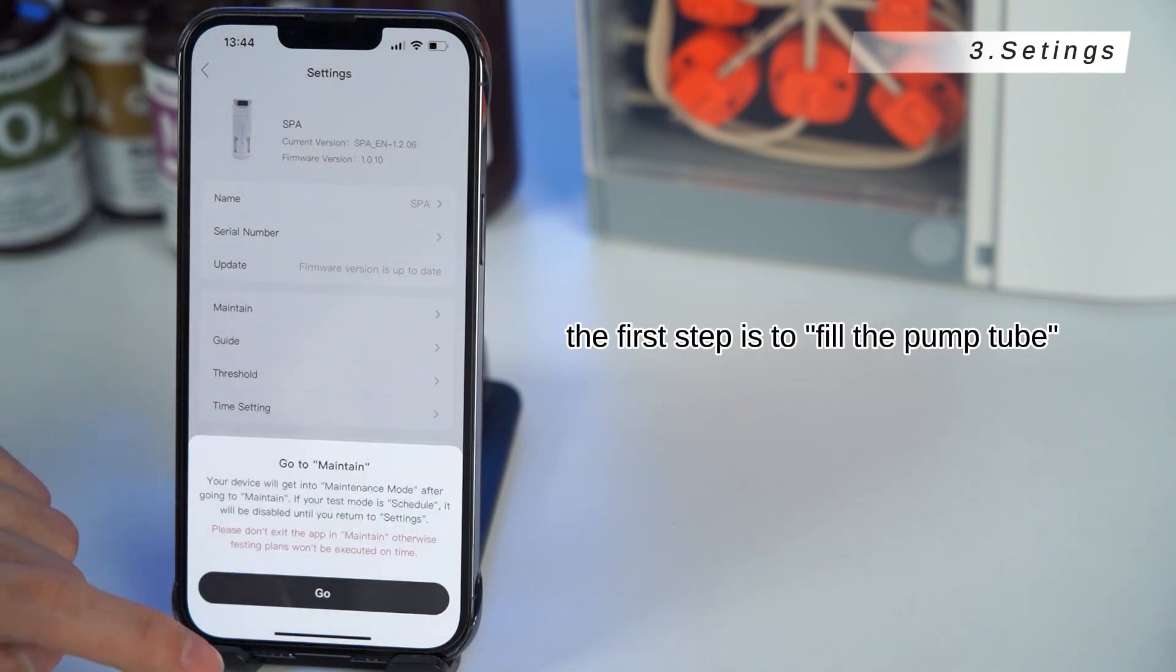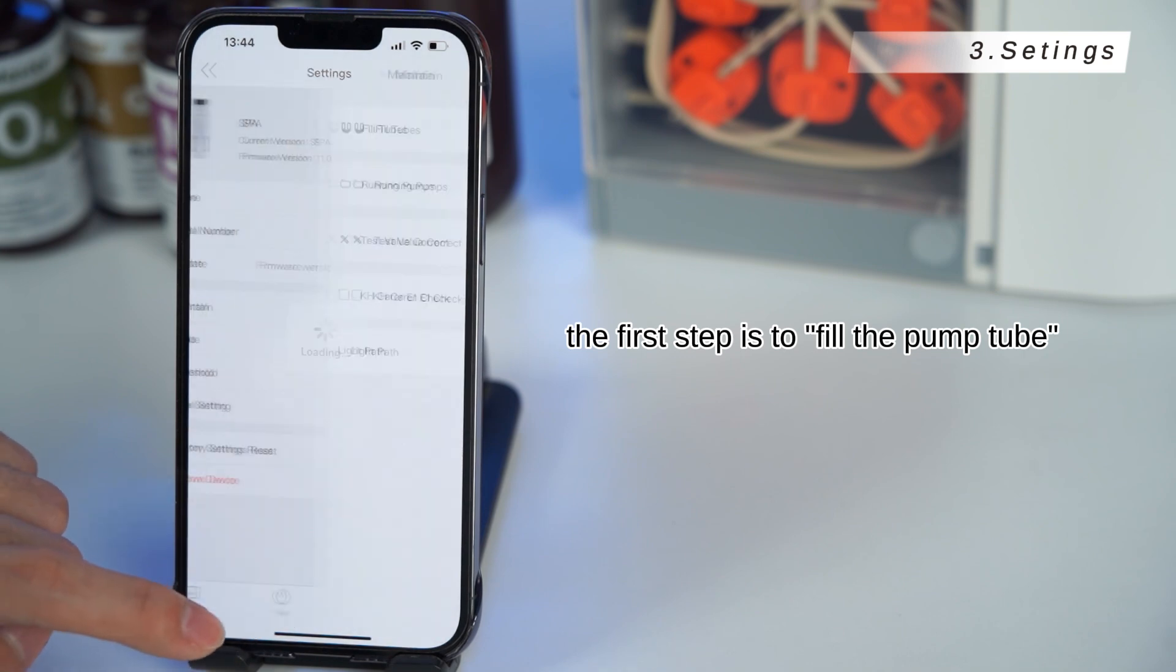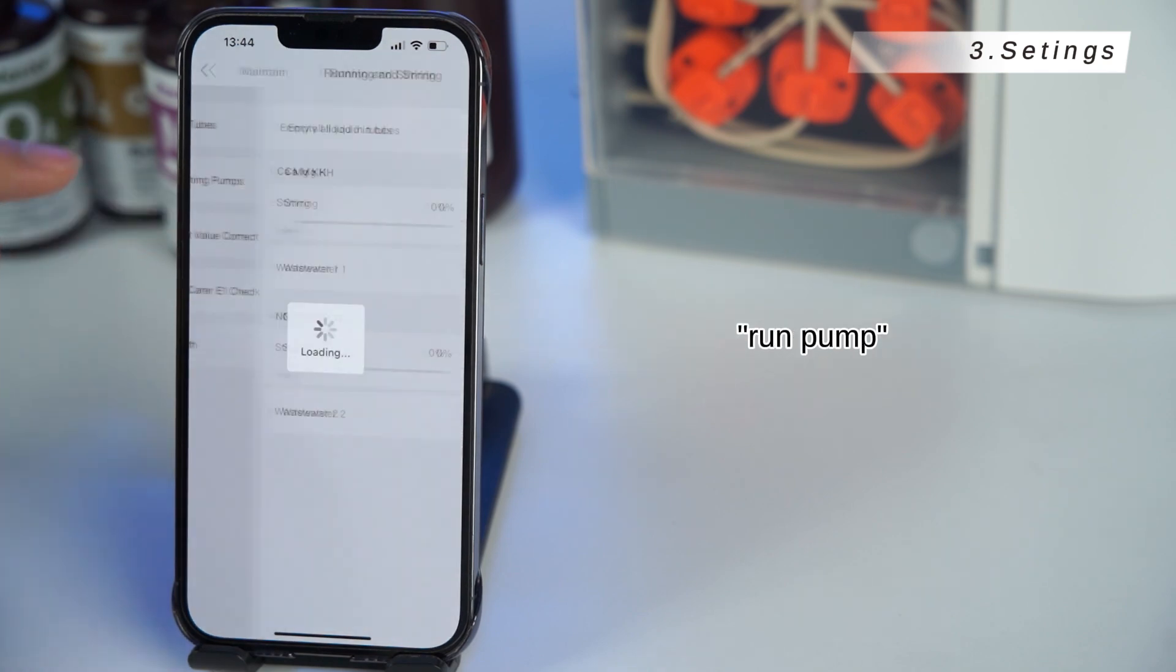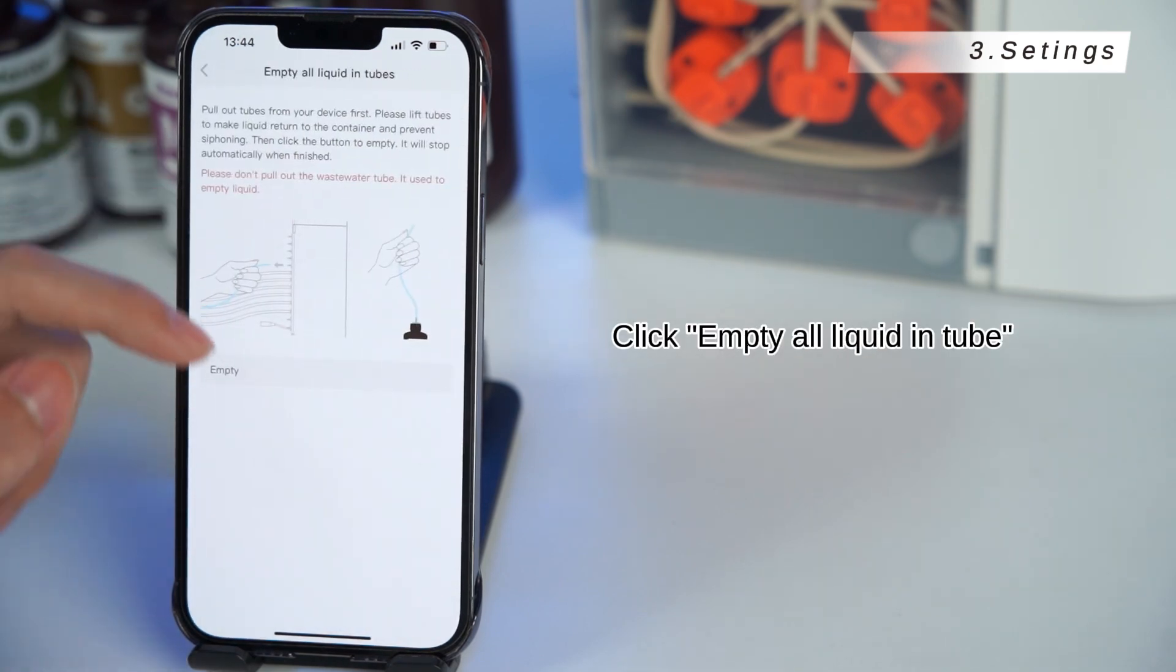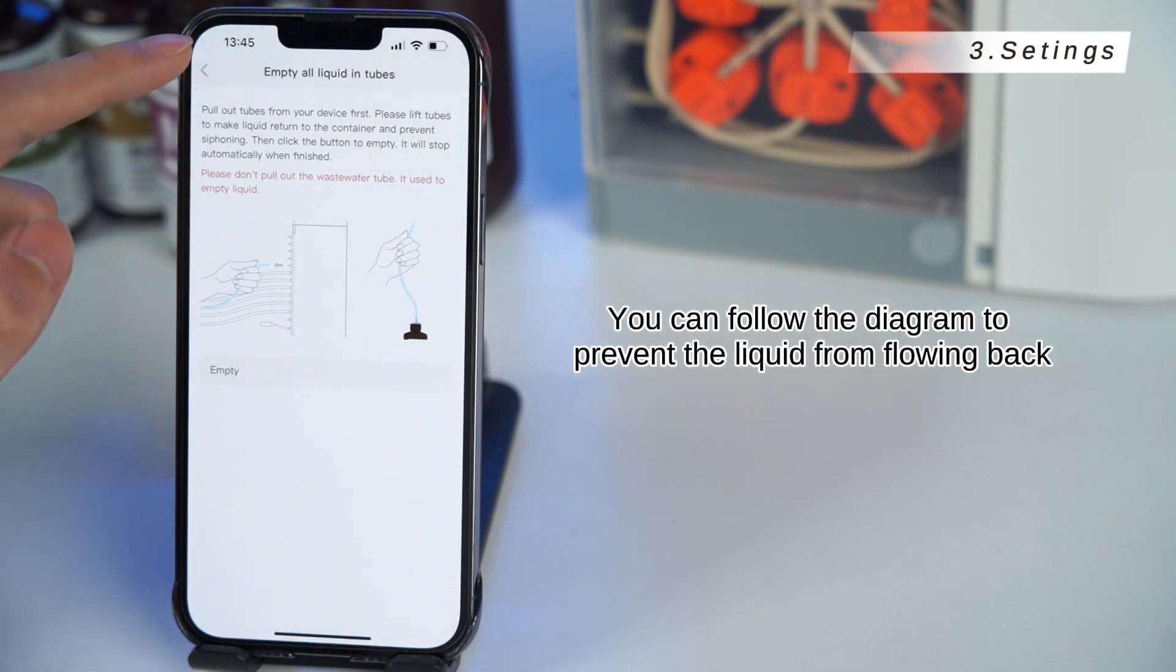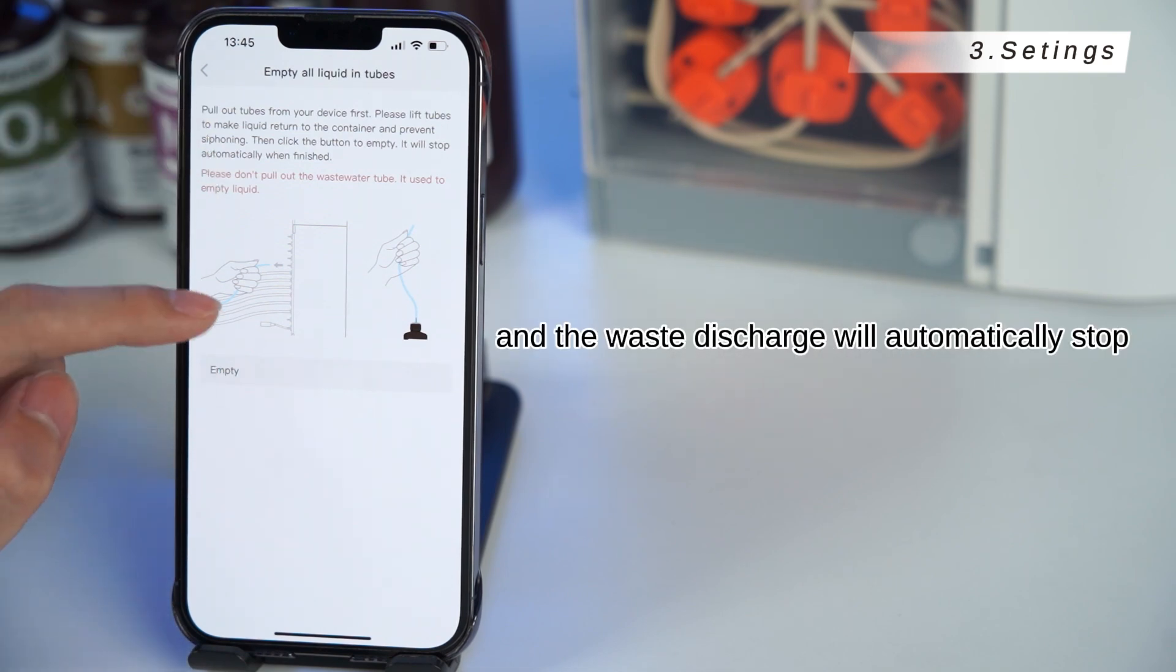Maintain. After entering, the first step is to fill the pump tube, which we need to do when we use it for the first time. Run pump, click empty all liquid in tube. Before emptying, unplug the other pipes of the waste liquid pipe from the machine. You can follow the diagram to prevent the liquid from flowing back. Click empty again, and the waste discharge will automatically stop.